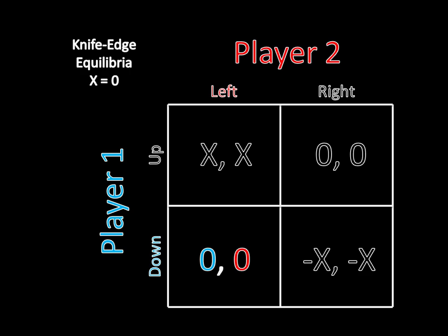So what do I mean by that? Well, consider this down-left equilibrium. When x is equal to 0, this is an equilibrium. Why is that the case? Well, again, if x is equal to 0, then player 1 can't profitably deviate from down to up because 0 is, in this case, exactly the same as x. And player 2 can't deviate because this red 0 is no different than this negative x because x is equal to 0. So this is an equilibrium, it's a Nash equilibrium, but it's also a knife-edge equilibrium.